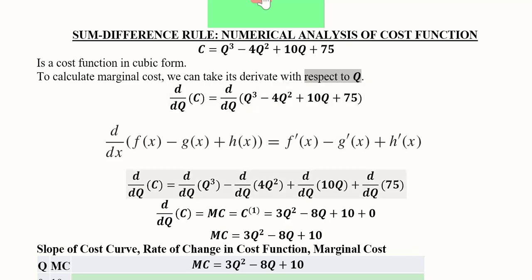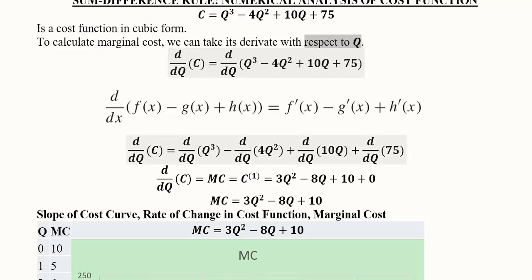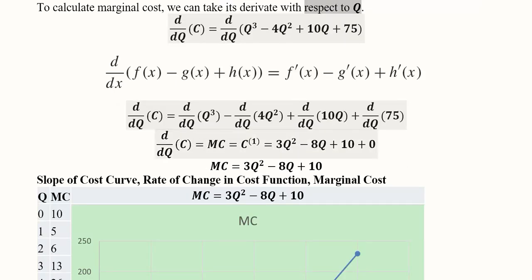So here the first term is Q³ and its derivative will be found, minus sign will be retained and 4Q² its derivative, plus sign will be retained 10Q its derivative, plus sign will be retained and the derivative of the constant that is 75. So here the difference rule, here the sum rules have been applied.